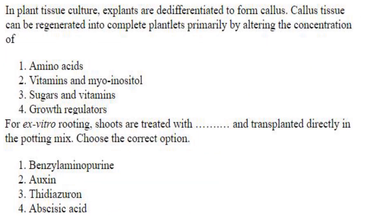In plant tissue culture, explants are de-differentiated to form callus. Callus tissue can be regenerated into a complete plant primarily by altering the concentration of growth regulators — those being auxin and cytokinin. Answer is option 4.